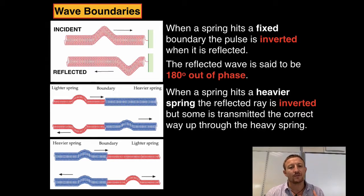We've got our incident wave coming through and again what we notice here is that we are going to get no inversion whatsoever. The wave will pass through the lighter spring but there will also be some reflection from that lighter spring.